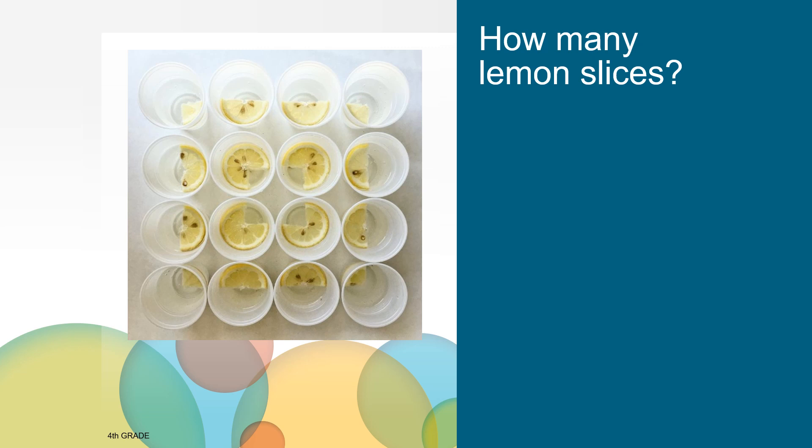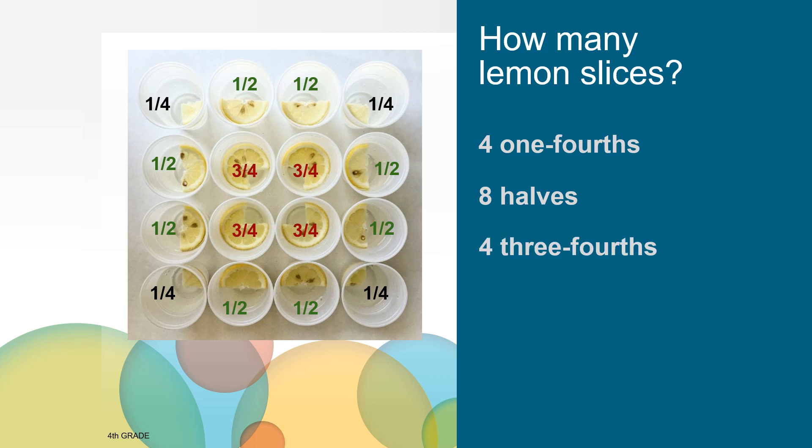You may have noticed that the lemon slices are different parts of the whole. For example, the corners are fourths. There are four one-fourths pieces. Along the sides, I can see halves. There are eight halves. In the middle, I can see three-fourths. There are four three-fourths.